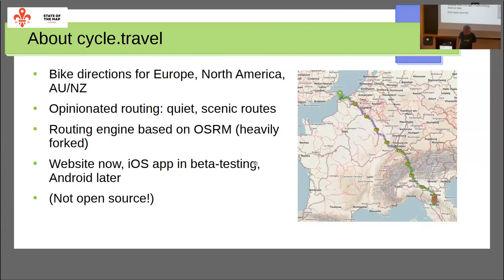At the moment cycle.travel is a website — that's the URL. It's based on OSRM, a well-known routing engine, but a very heavily forked version. There's probably about 2,000 to 3,000 lines of code in there just looking at tags. It's a website now, but there is an iPhone app which is in beta testing.